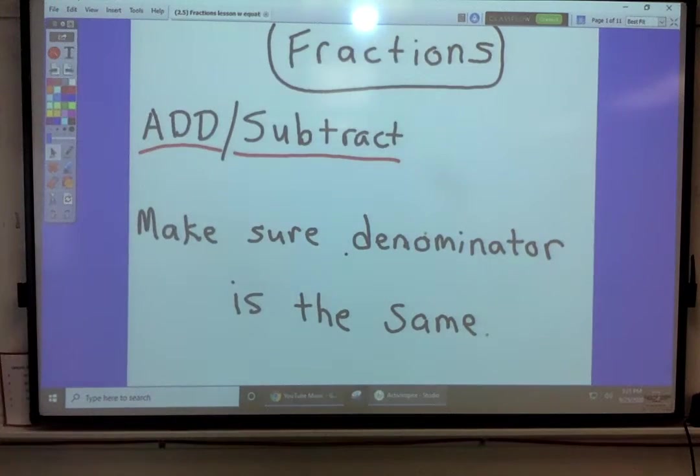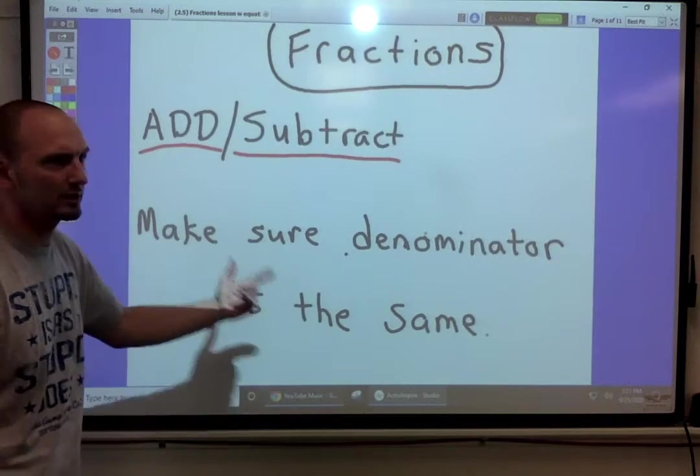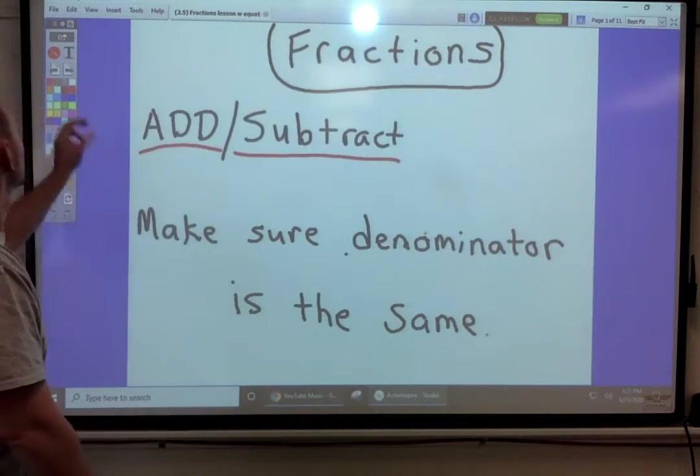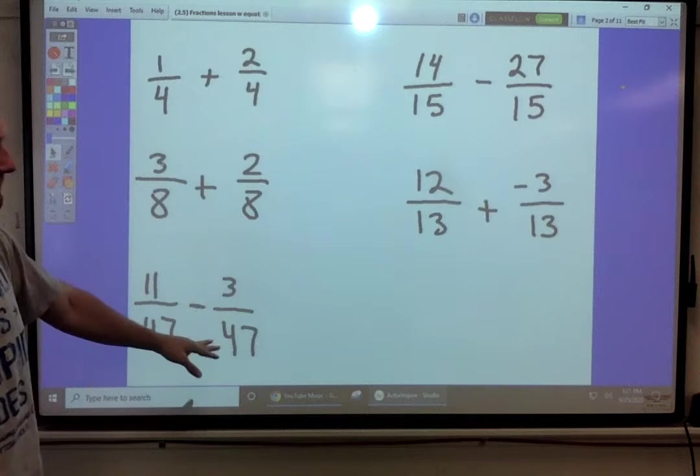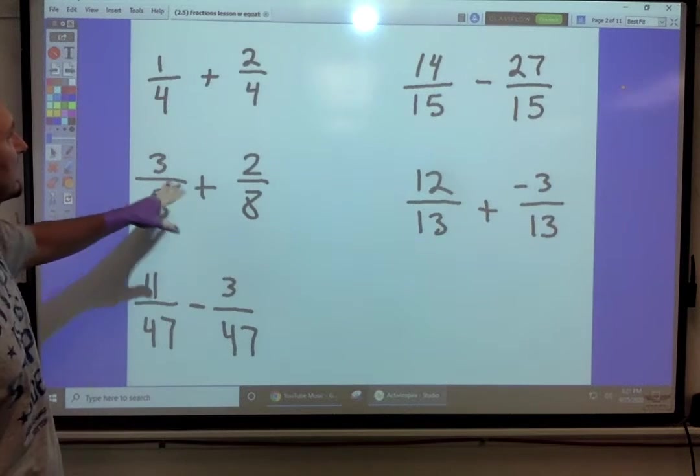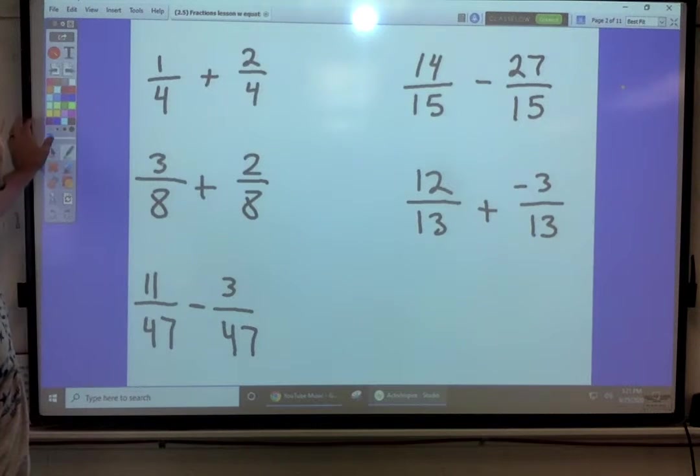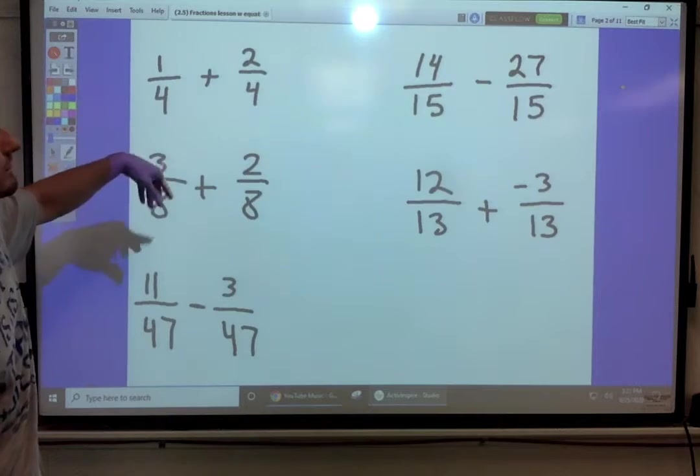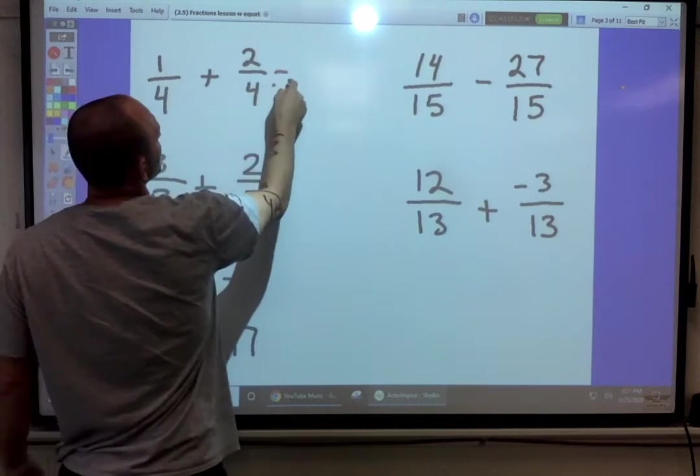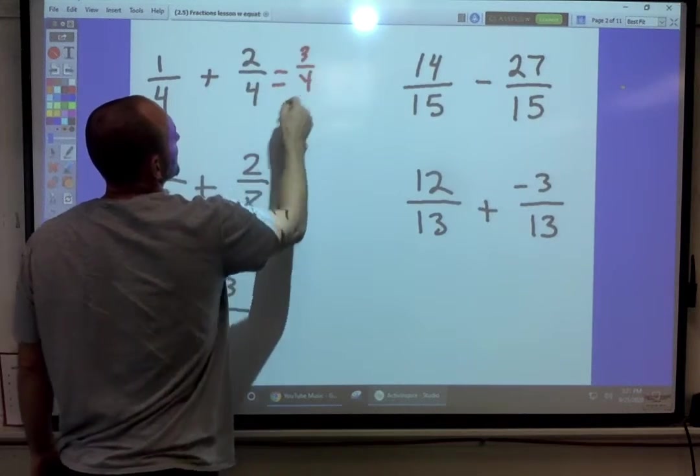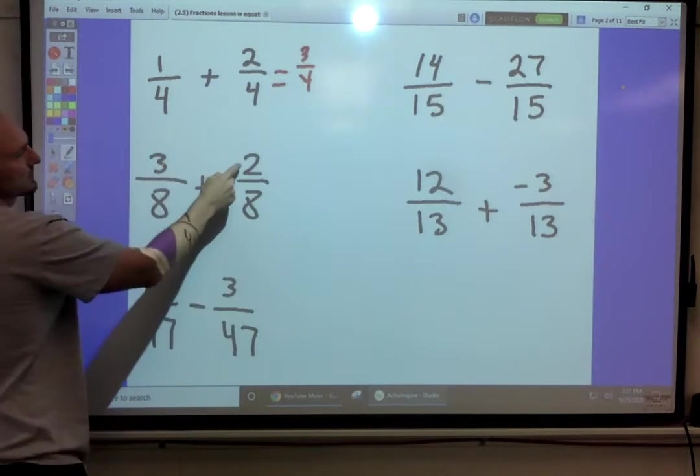When you add or subtract, you've got to remember that the denominator needs to be the same. Denominator is the bottom number. You just leave it like it is and do the operation to the top. One plus two, three-fourths.